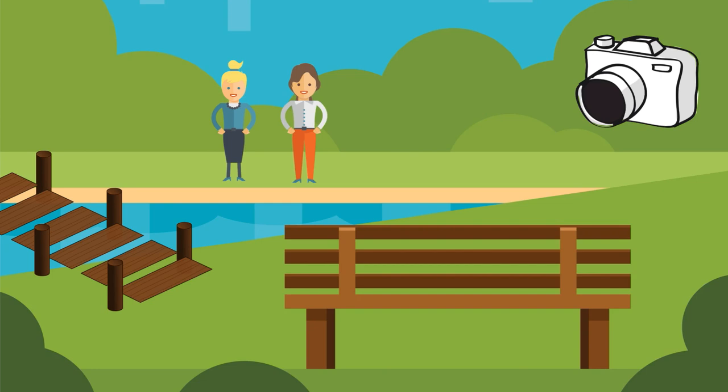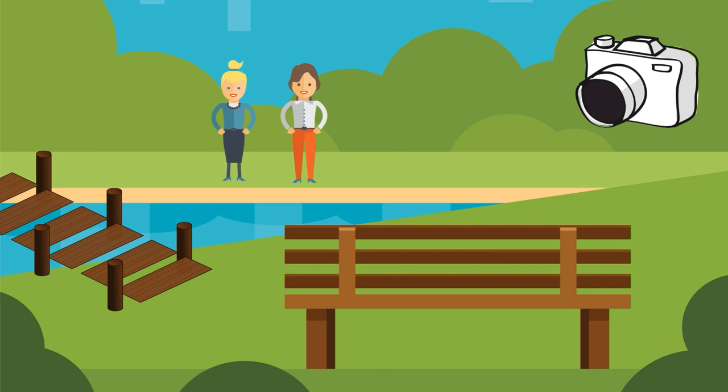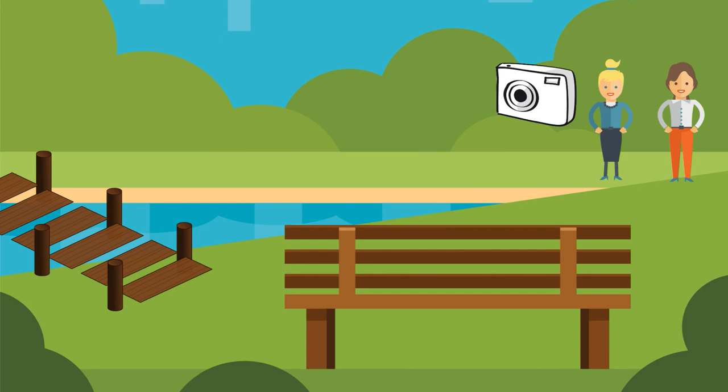Each duo will take pictures of things they think symbolize the group. In this case, one duo is walking in a park and takes pictures of a bridge. Another duo is taking a hike and takes a picture of the roots of a tree.